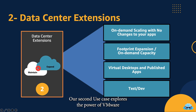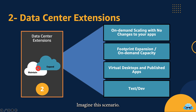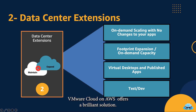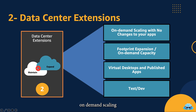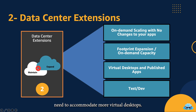Our second use case explores the power of VMware Cloud on AWS as a data center extension. Here, we're not talking about evacuating data centers but extending them seamlessly into the cloud. Imagine this scenario: your organization needs to scale resources on demand, perhaps for a sudden surge in workloads. VMware Cloud on AWS offers a brilliant solution. On-Demand Scaling — with VMware Cloud on AWS, you can extend your on-premises data center resources into the cloud, giving you the ability to scale up or down as needed. Need to accommodate more virtual desktops, VDI, for remote employees? It's a breeze.